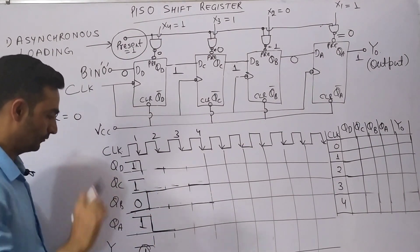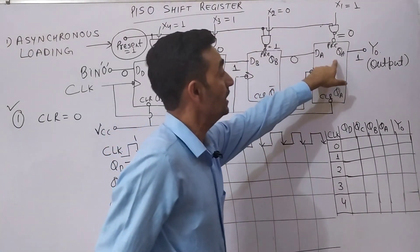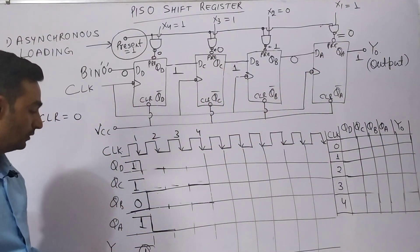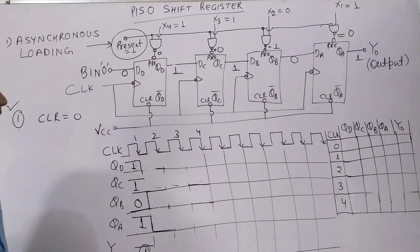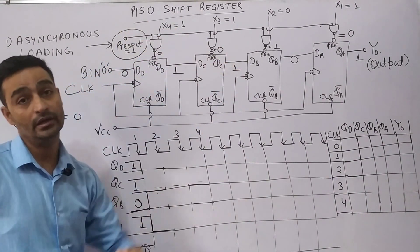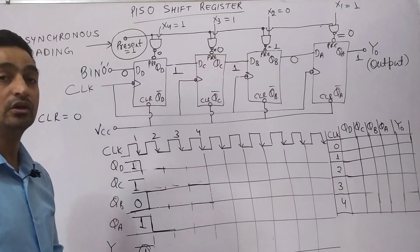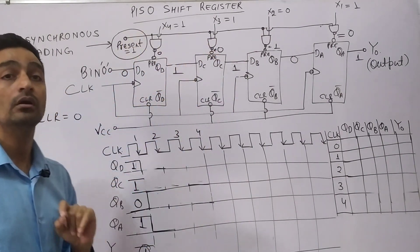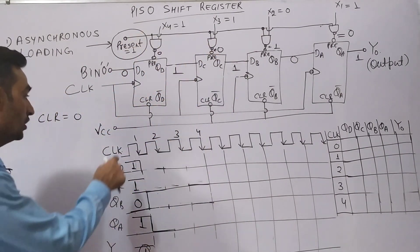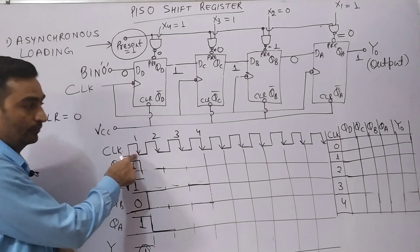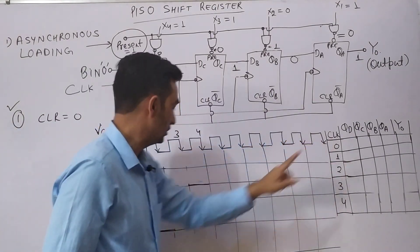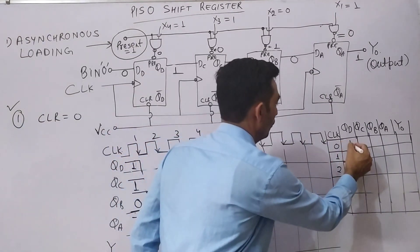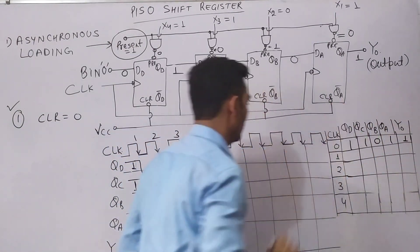So 1, 1, 0, 1 is the data loaded into each flip-flop. Since QA is connected to the output, YO will be equal to 1. So far we have done asynchronous loading of the data — this loading was independent of the clock. Now this is the first clock edge coming. At clock 0 we have data 1, 1, 0, 1 and output is 1.